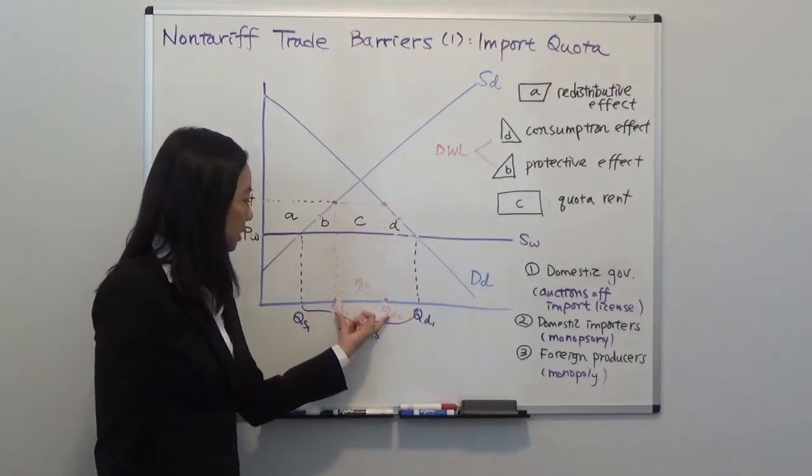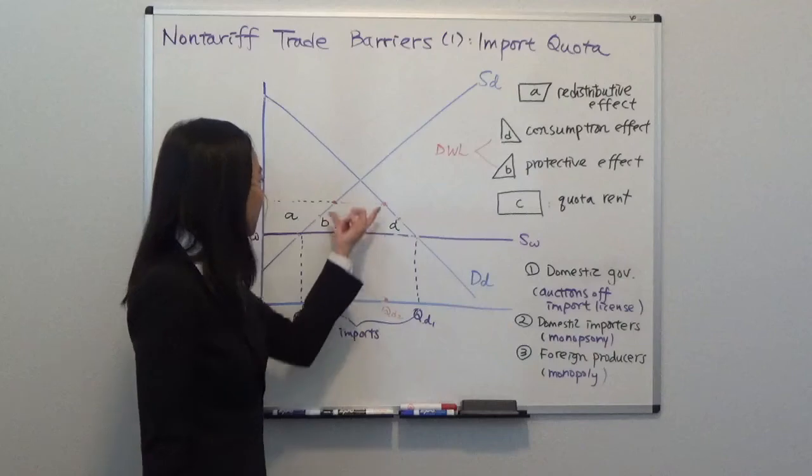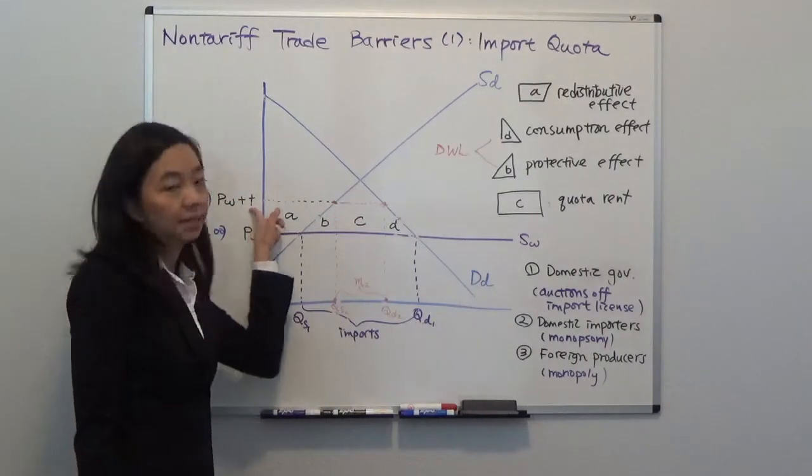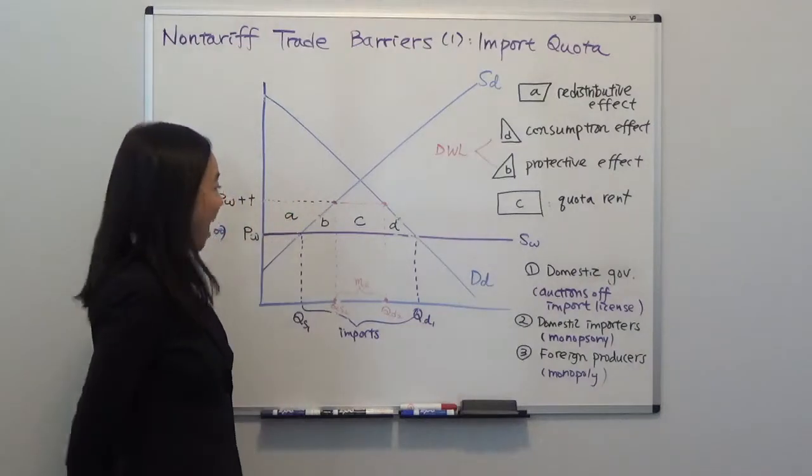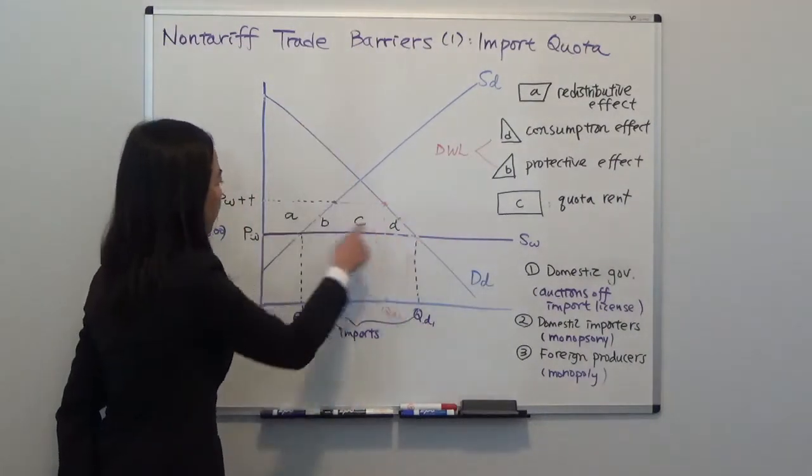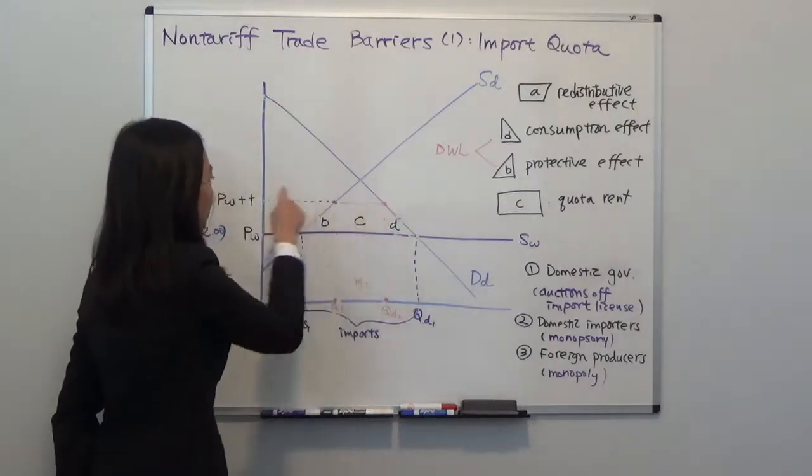Now QD2 tells you the domestic quantity demanded and QS2 tells you the domestic quantity supplied with the quota restriction. So given that quantity demanded and quantity supplied, you can see our price has gone up from PW to PW plus T. And our consumer surplus will go down from that big triangle to a smaller triangle.